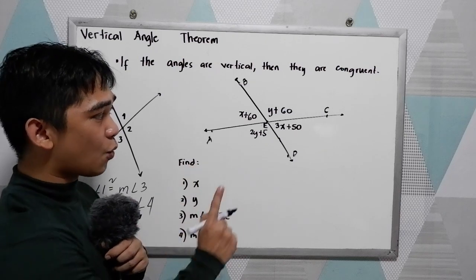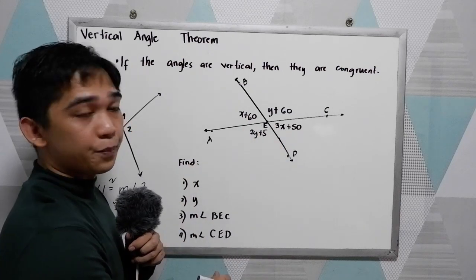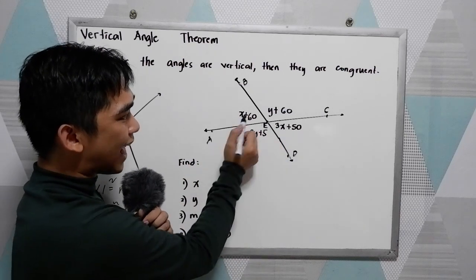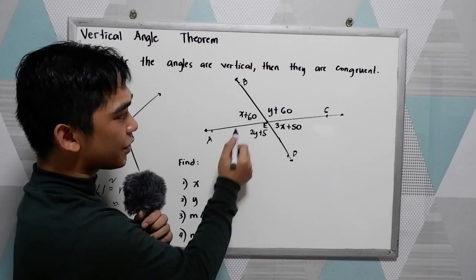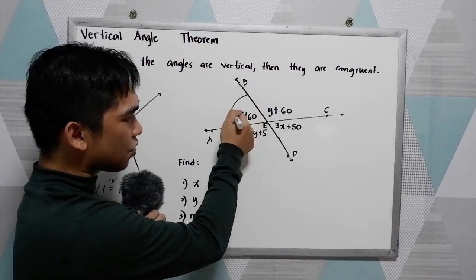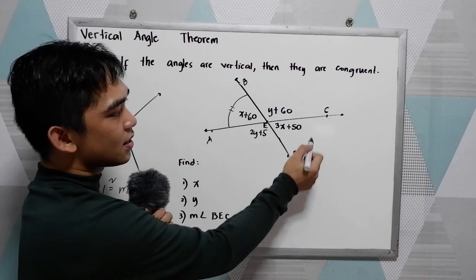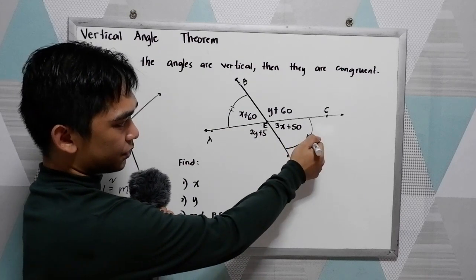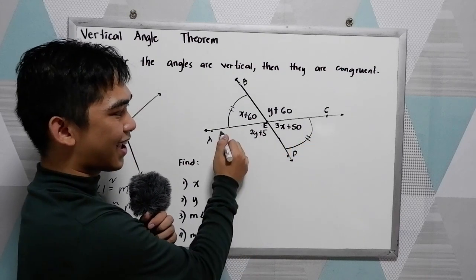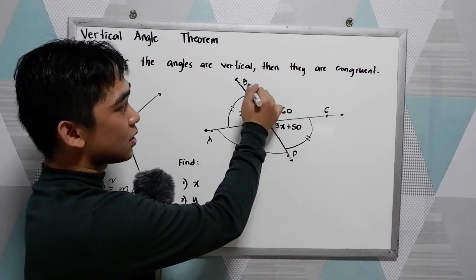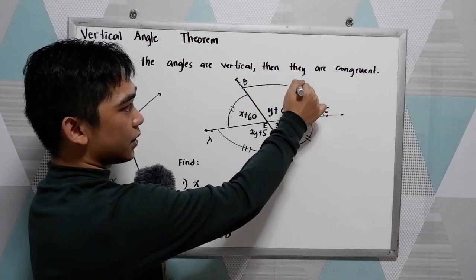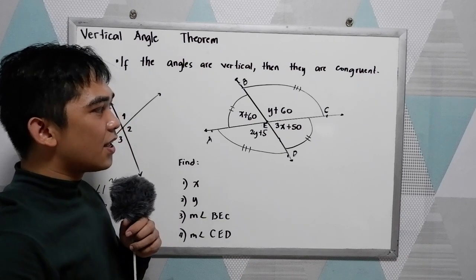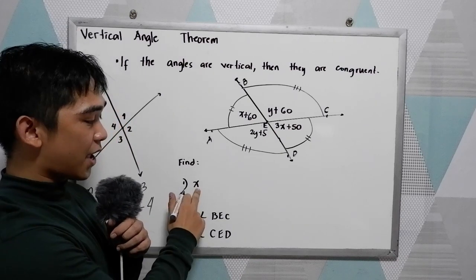Let us first study our illustration. We know that by the vertical angle theorem, vertical angles are congruent. This angle is equal to this angle, and this one is equal to this angle. Now, let's find x.